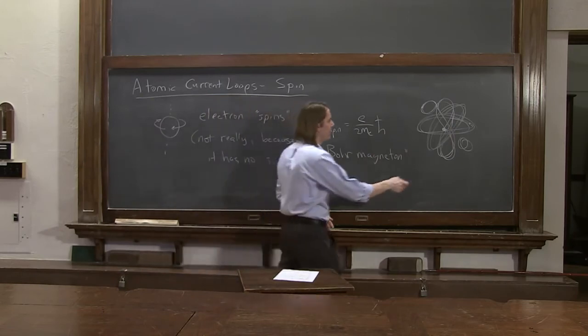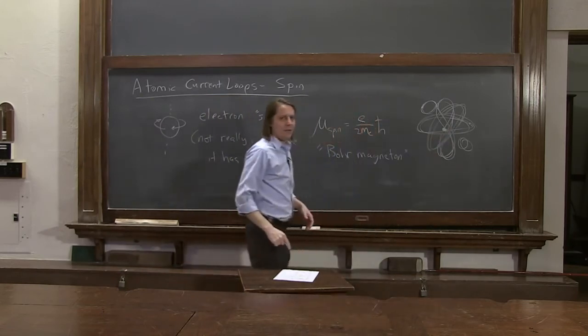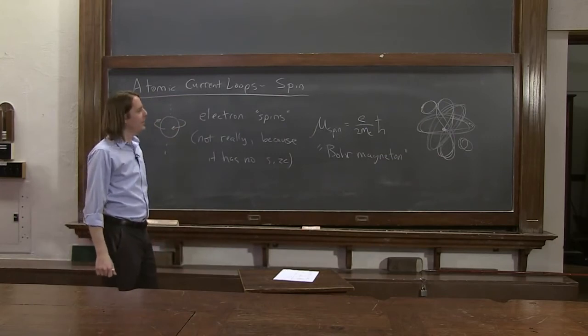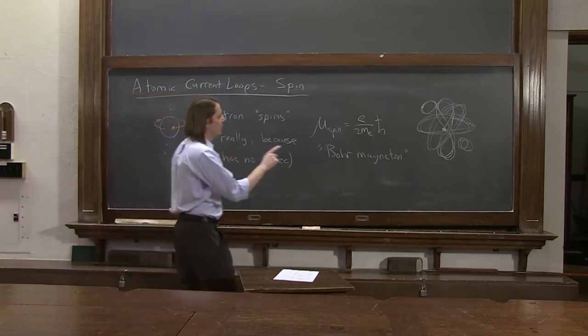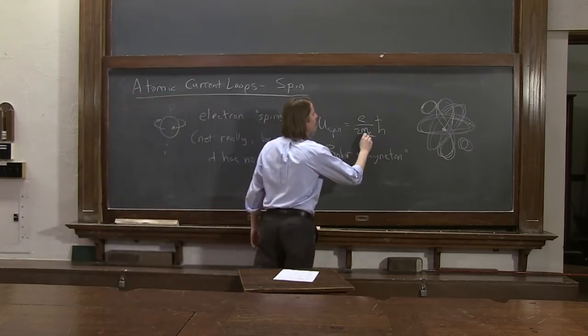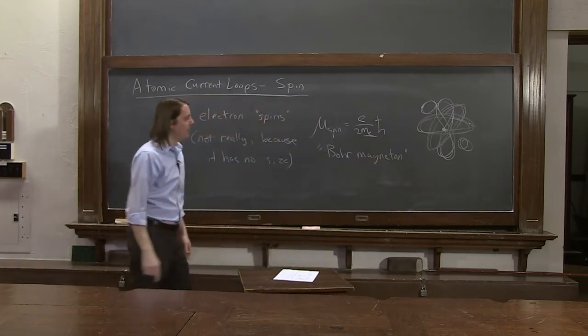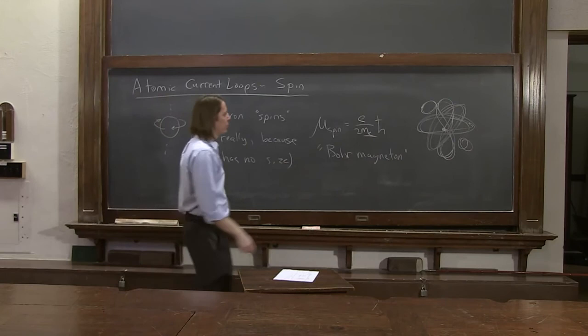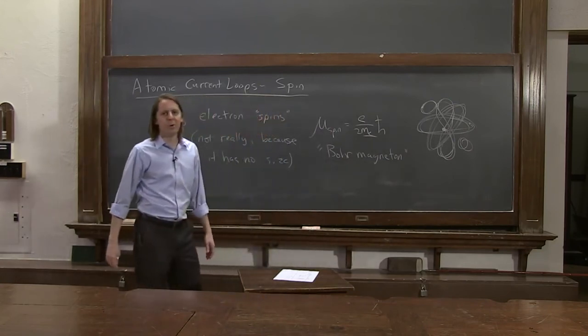And then what about the nucleus? What about the neutrons and the protons? They have spin. So they have magnetic moments as well. But you always have the mass in the bottom. And we know that the mass of the neutron and the proton is about 1,000 times higher than the electron. So their contributions to the total magnetic moment are pretty small.